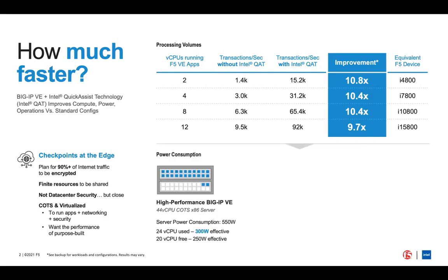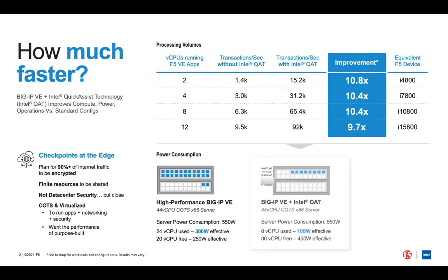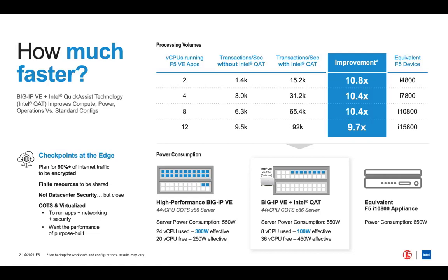And in power consumption, there is no contest. Comparing one of our more popular F5 i-series high-performance devices to running on a COTS x86 server: to get the same performance from our virtual edition without QAT, you will need three times the compute resources, meaning three times the power consumption and less resources for your edge applications. Against the F5 appliance, you will consume over six times less power — no contest.